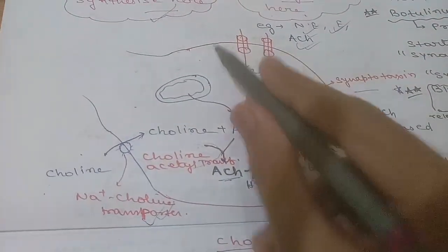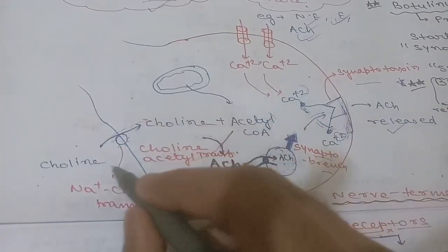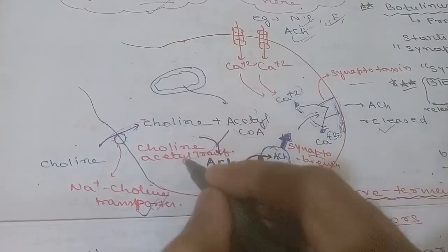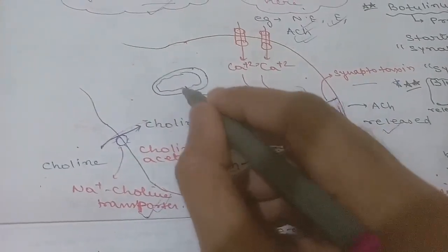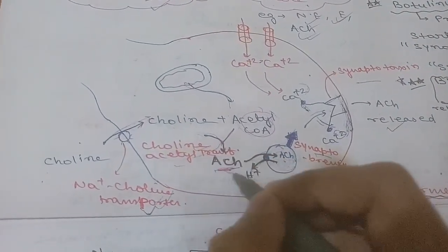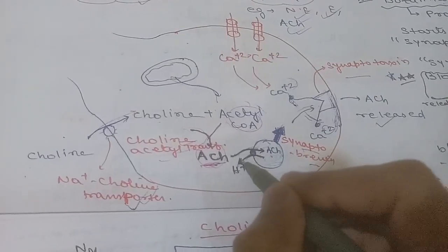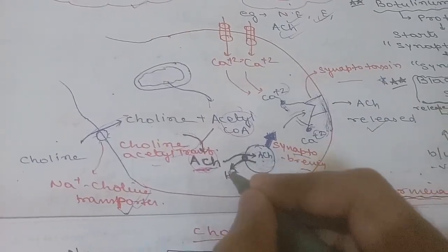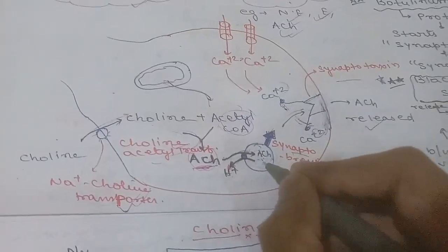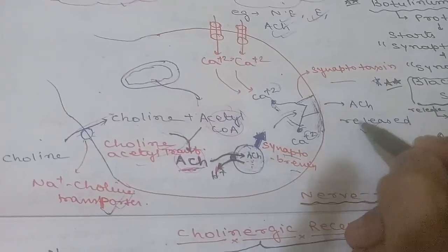Choline is transported into the nerve terminal by the sodium-choline transporter. Inside, choline combines with acetyl-CoA (from mitochondria) via the enzyme choline acetyltransferase to form acetylcholine. Acetylcholine is then packed into vesicles using the vesicular acetylcholine transporter (VAChT), where H⁺ exits the vesicle and acetylcholine enters.